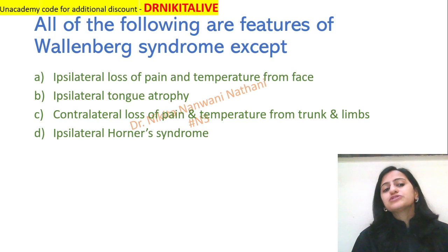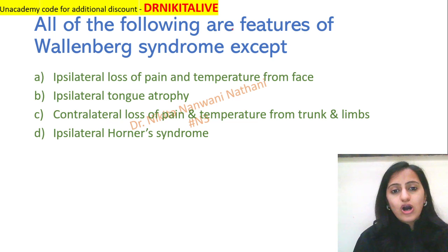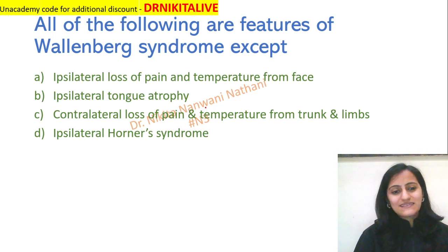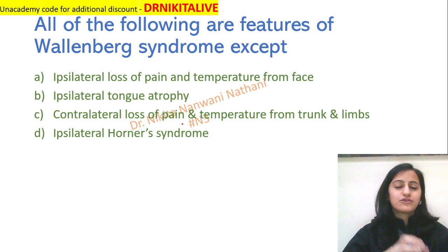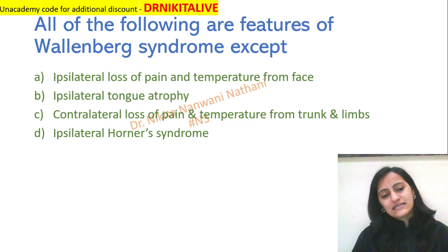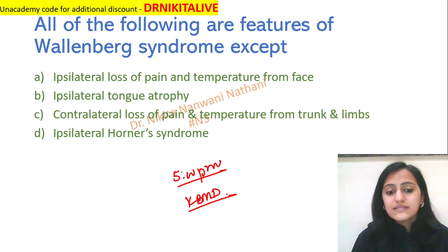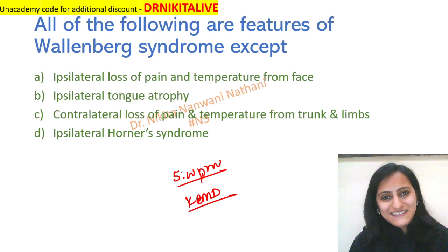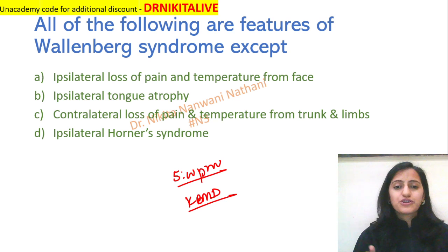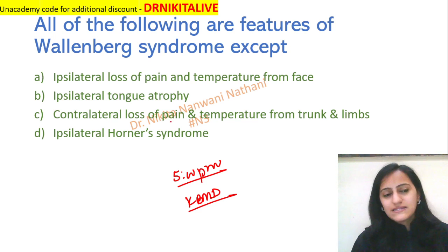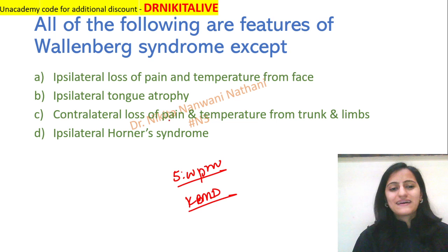Here is a review question for you: all of the following are features of Wallenberg syndrome except which one? Let me know the answers in the comments. We will have many more MCQs with twists and turns, image-based questions, and MRI images integrated to assess understanding of brainstem syndromes today at 5pm on the app — Kaan Banega MD, a live quiz on brainstem syndromes with all PYQs discussed. Make sure you watch all the initial part 1 to 4 videos. Thank you so much, goodbye, take care, and keep studying, keep revising, keep winning.